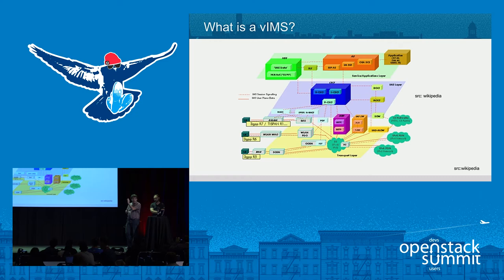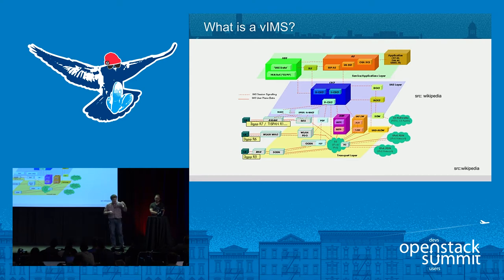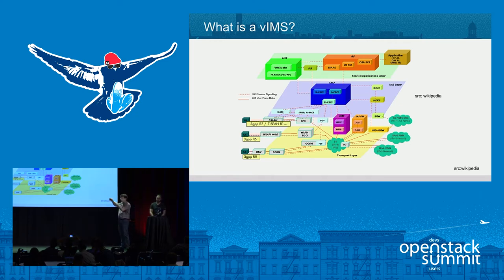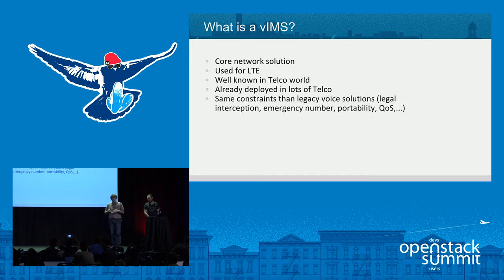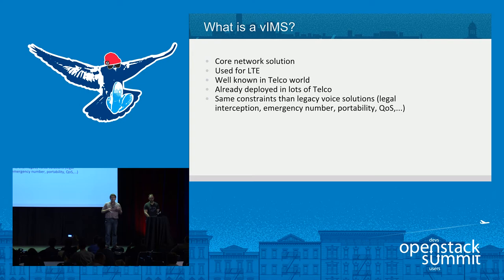I will not detail all the boxes, but lots of people work on that to detail all the different interfaces, all the different boxes and the protocols. It's really the usual stuff we do in telco where people spend years defining that. Then the vendors implement solutions, and we do lots of interoperability testing to make all these boxes work well together. VIMS is a core network used for LTE, very well known in the telco world, already deployed in lots of telcos. You have specific telco constraints such as legal interception and emergency numbers.